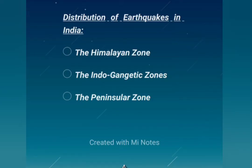Next, the distribution of earthquake in India. There are three zones: the Himalayan zone, the Indo-Gangetic zone, and the Peninsular zone. The Himalayan zone includes the states of Jammu and Kashmir, Himachal Pradesh, Uttar Pradesh, and Bihar. This zone experiences maximum intensity earthquakes in India.